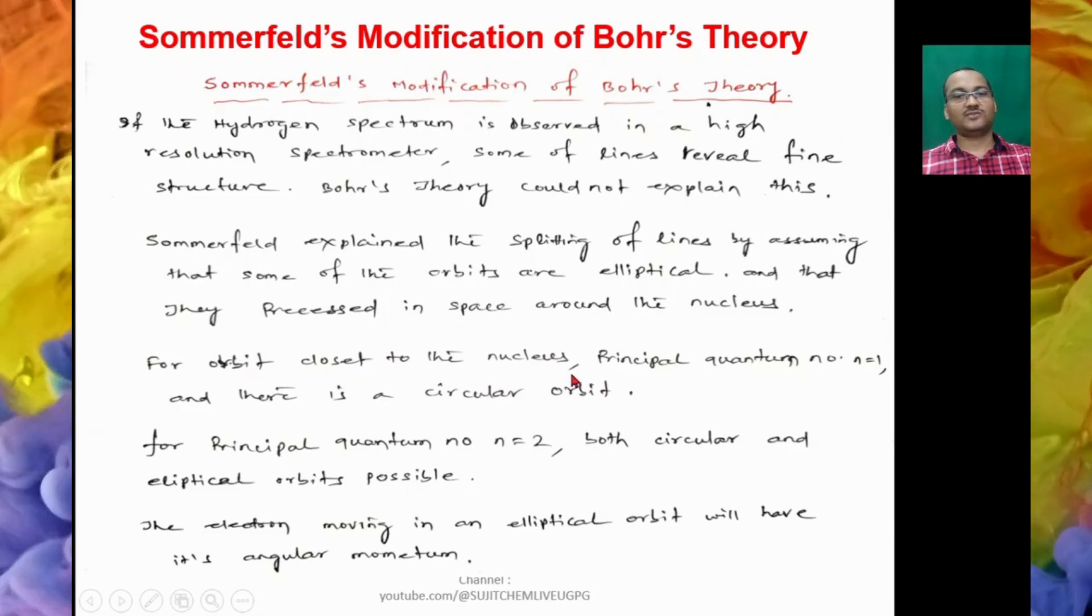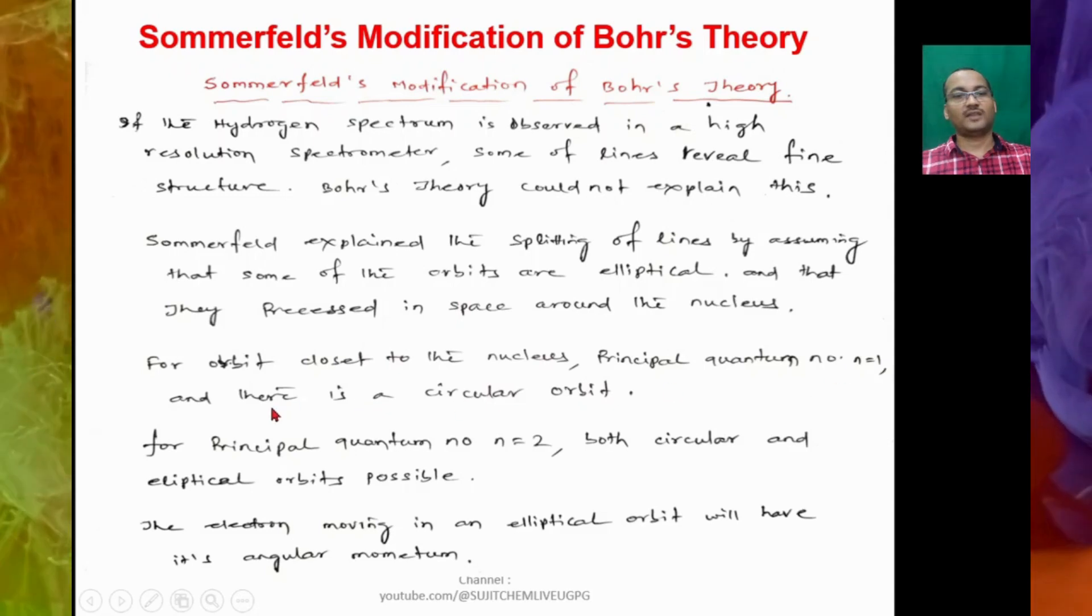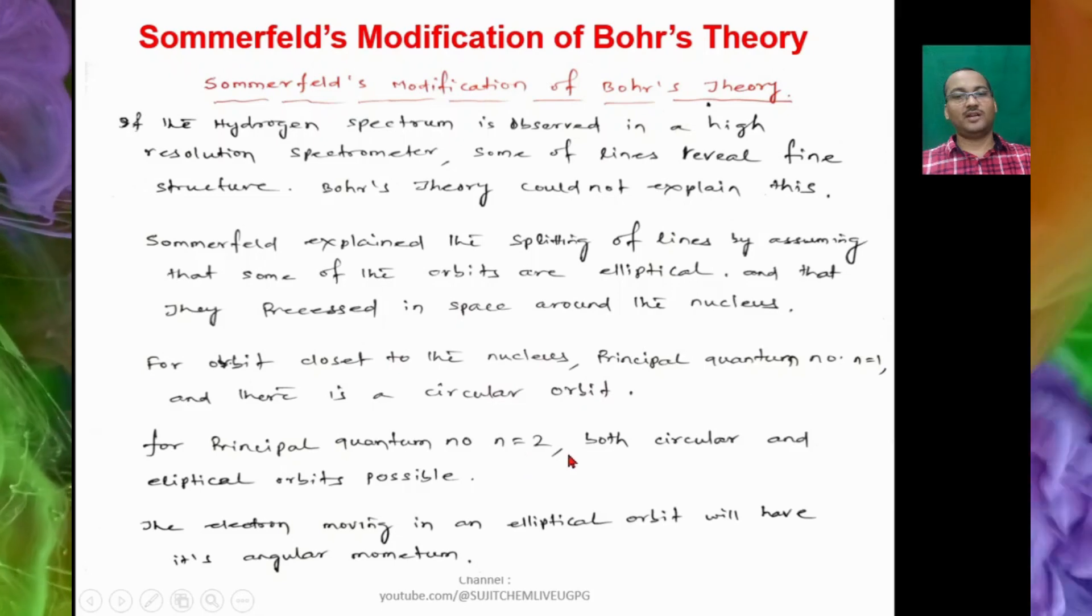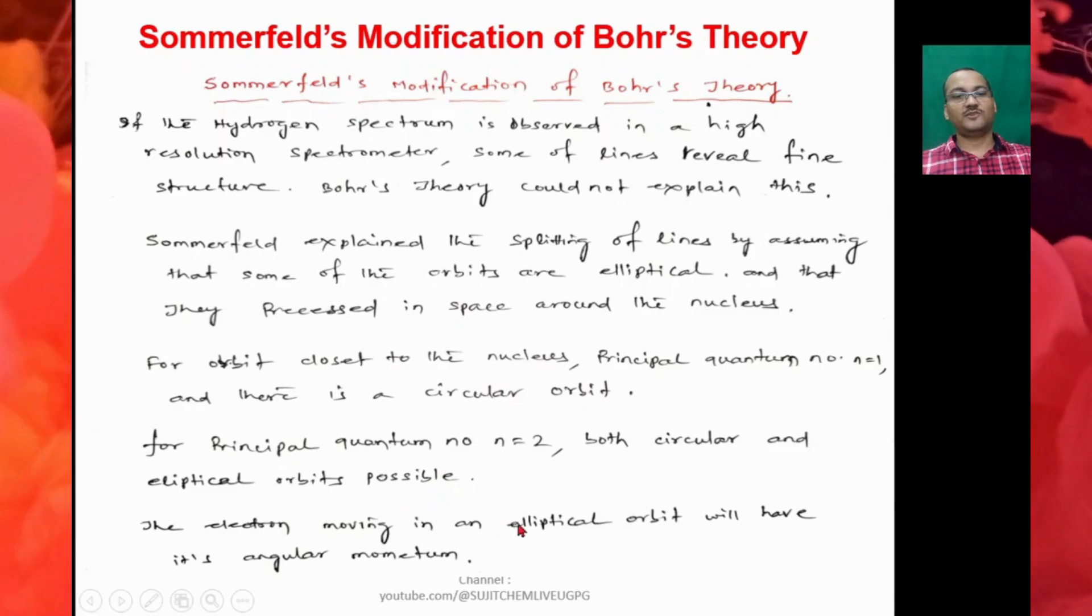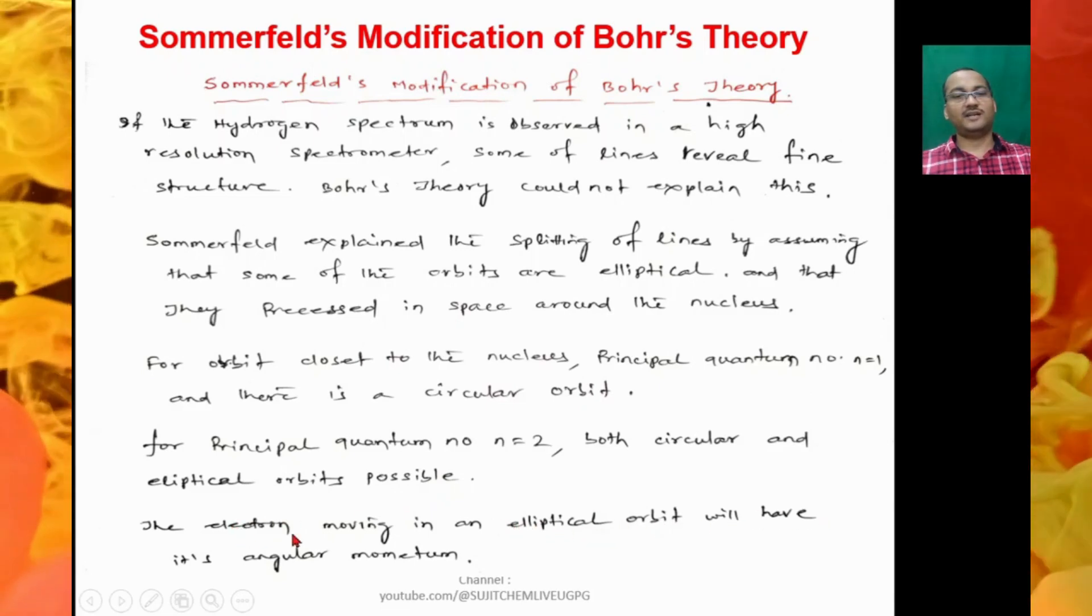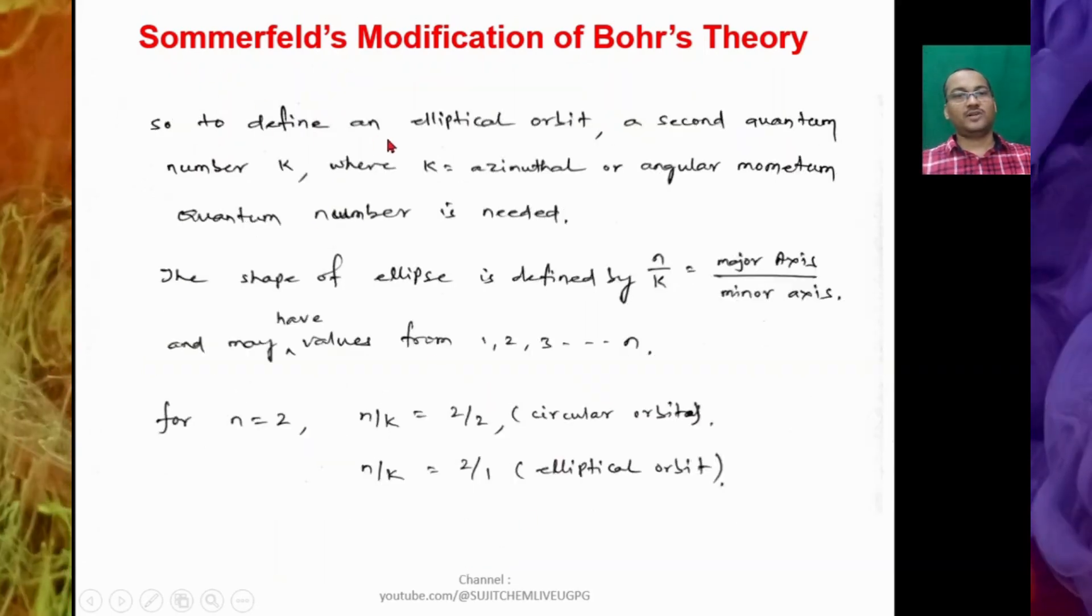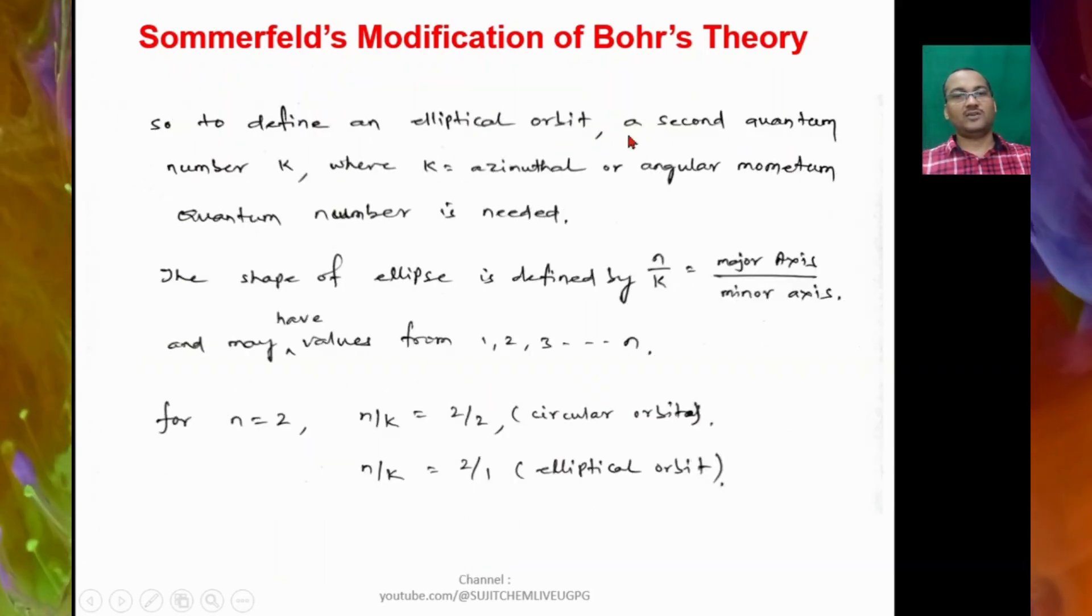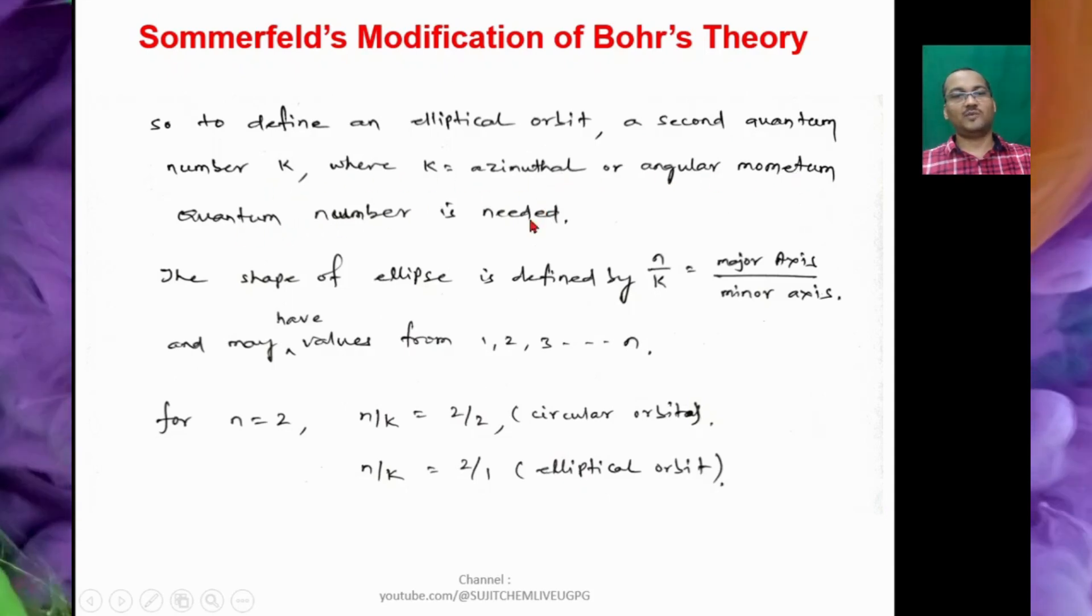So for first orbit closest to the nucleus, the principal quantum number N₁, N = 1, and there is a circular orbit. For principal quantum number N = 2, both circular and elliptical orbits are possible. The electrons moving in an elliptical orbit will have its angular momentum. So to define an elliptical orbit, a second quantum number K, where K is azimuthal or angular momentum quantum number, is needed.